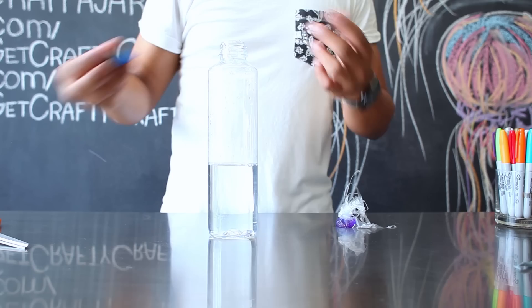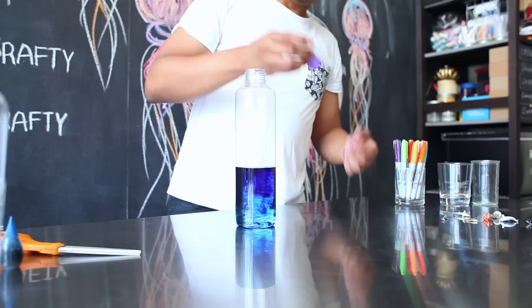To prep your water bottle fill it up about halfway with water and add about five drops of blue food coloring or less depending on how much color you actually want to have in your water bottle.